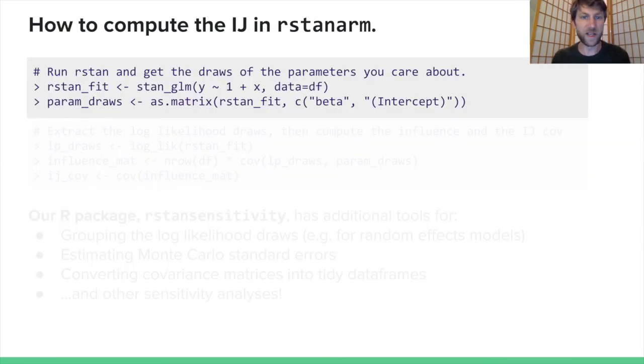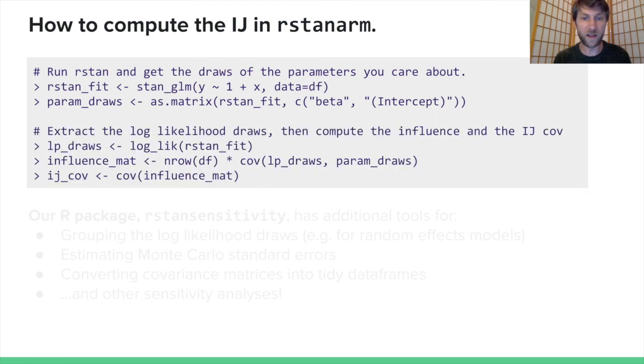I'll conclude by talking about how you compute the IJ covariance in Stan and in RStanARM. It begins by getting your MCMC samples as usual. In this case, we'll use RStanARM. We'll just call Stan GLM, and then we extract our parameter draws for the quantities we're interested in. Then we'll do some stuff that you need just for the IJ covariance. You need the draws of the likelihoods of the individual data points to compute the IJ covariance. It turns out this is also needed for the loo package, so it's already implemented in RStanARM. You just call the log-like function on your fit, and it returns those draws. Once you have those draws, you compute the influence scores by computing this covariance. Then you compute the covariance of those influence scores, and you're done. That's the IJ covariance. This is what we're talking about when we say effortless computation of frequentist variances.